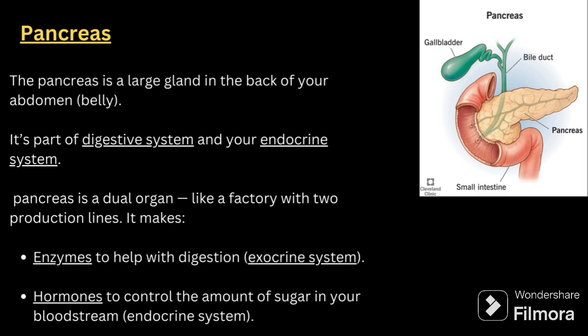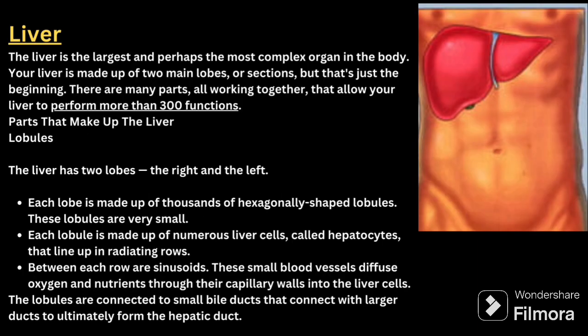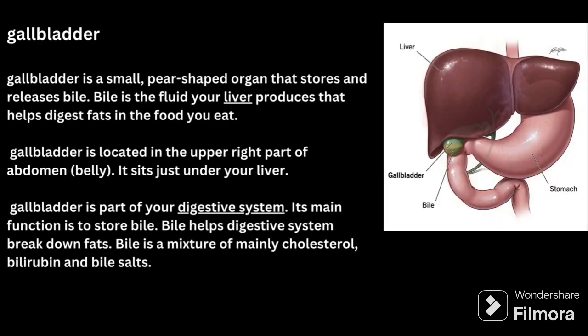The liver is the largest and perhaps the most complex organ in the body, made up of two main lobes — the right and the left. There are many parts working together that allow the liver to perform more than 300 functions. Each lobe is made up of thousands of hexagonally shaped lobules. Each lobule is made up of numerous liver cells called hepatocytes. Between each row of hepatocytes are sinusoids — small blood vessels that diffuse oxygen and nutrients through the capillary walls into the liver cells. The lobules are connected to small bile ducts that form the hepatic ducts.